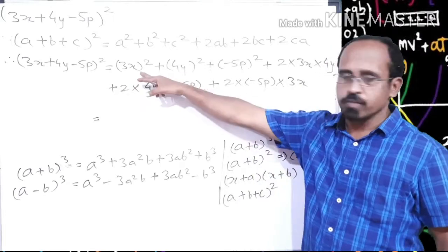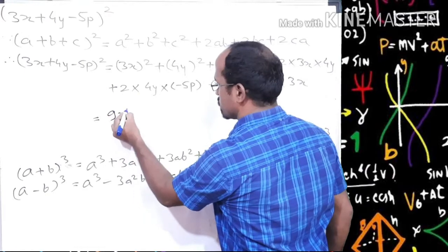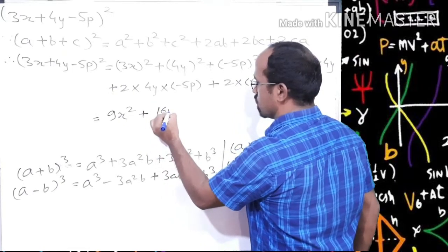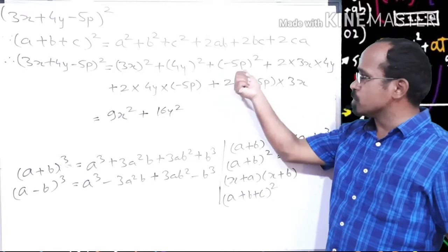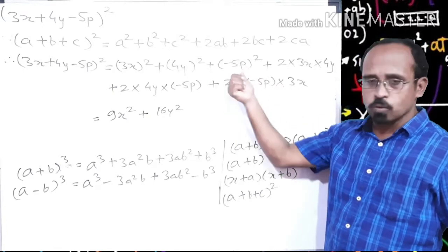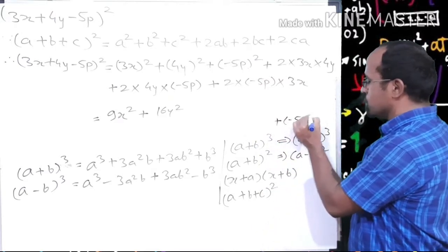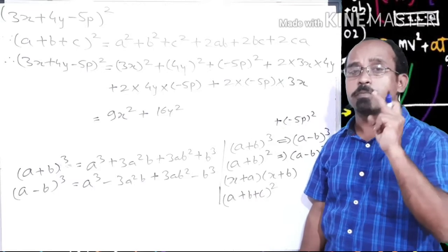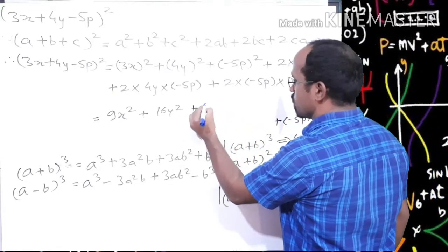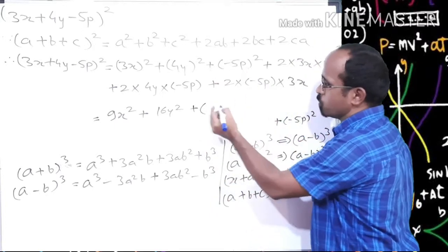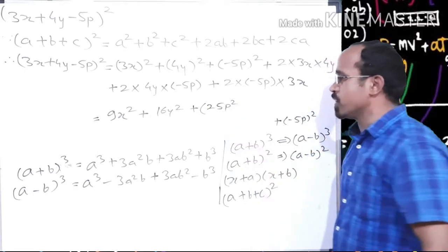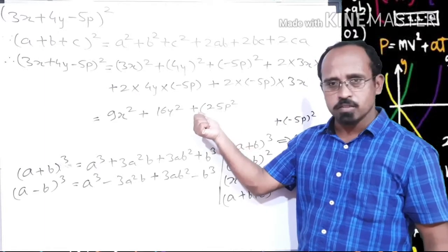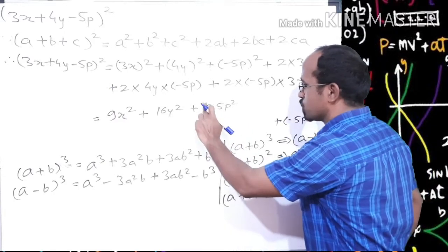Now let's expand left to right using BODMAS. (3x)² = 9x², plus (4y)² = 16y². For (−5p)²: squaring removes the bracket — minus times minus gives plus, so (−5p)² = +25p². The sign inside the bracket is minus and the operation is squaring, so the result is plus 25p².